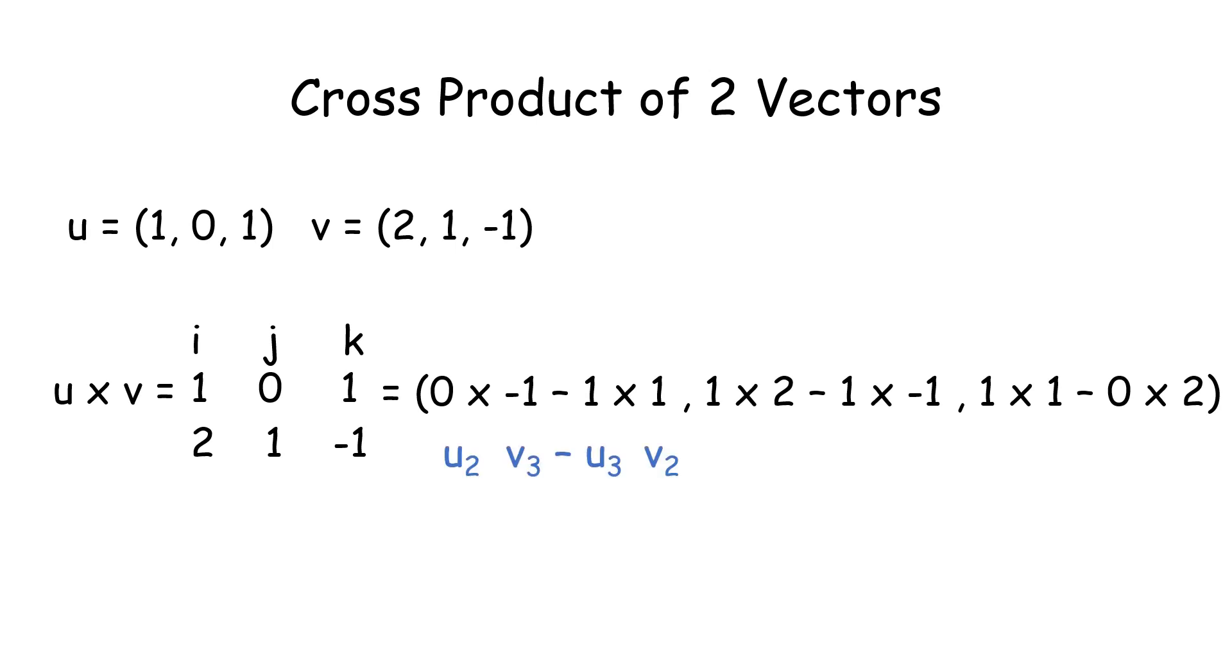So we have u2 times v3 minus u3 times v2, so we've got 0 times negative 1 minus 1 times 1.